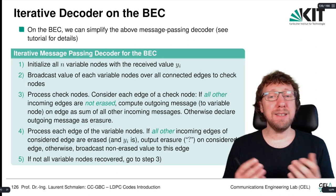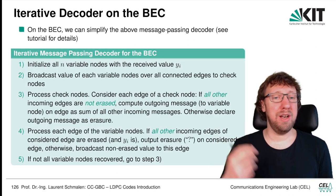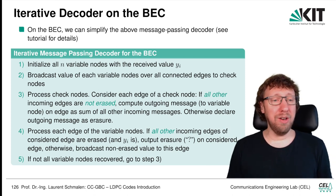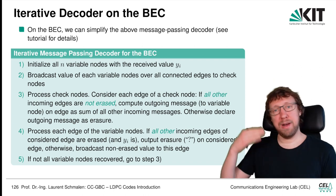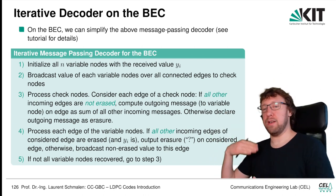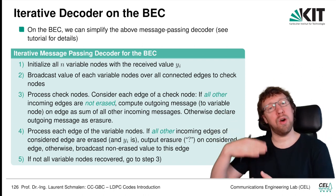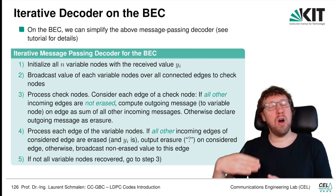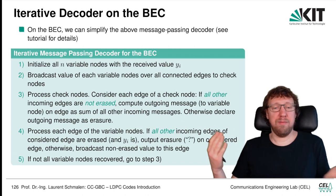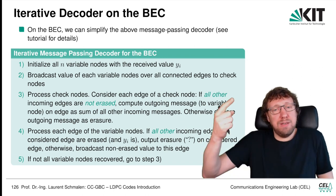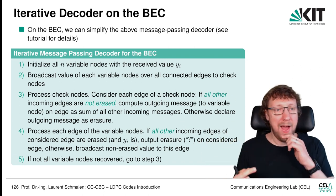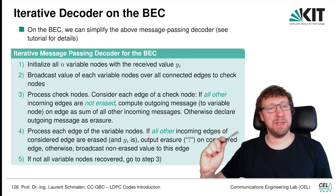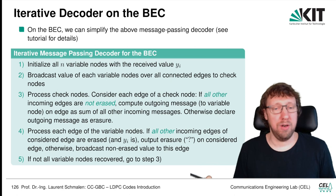The messages we have are essentially 0, 1, or an erasure. The log-likelihood ratios can be either plus infinity, minus infinity, or zero — either you know your value perfectly, or you don't know your value at all. So either plus 1, minus 1, or 0. The messages can only be plus 1, minus 1, zero, or erasure.